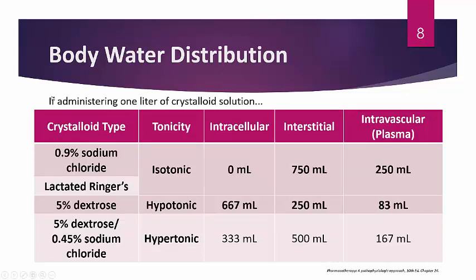Reviewing the breakdown of main solutions: 0.9% sodium chloride (normal saline) and lactated Ringer's are both isotonic — they do not enter cells and only go into extracellular portions (interstitial and intravascular plasma). 75% goes to interstitial space and 250 mL goes to plasma. These bolded numbers are important to know. Lactated Ringer's and 0.9% sodium chloride essentially do the same thing.